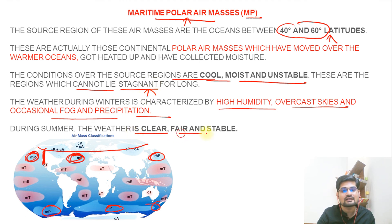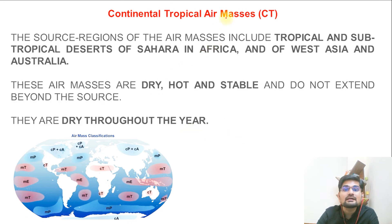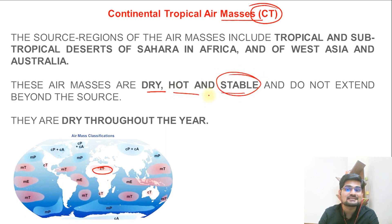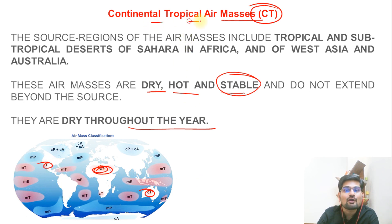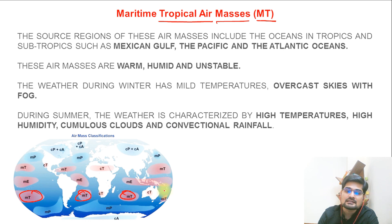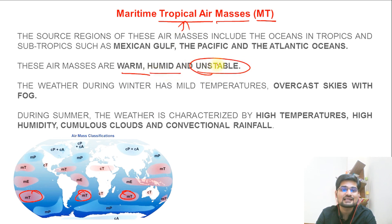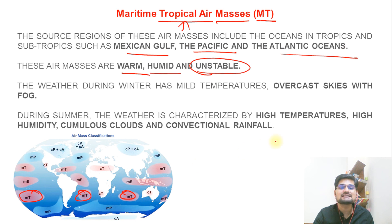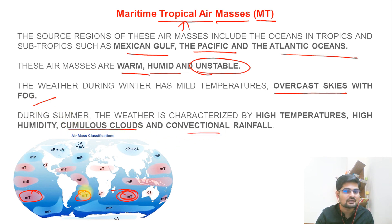The continental tropical air mass (CT) is found in the interior of the continent — warmer and dry because no moisture is available — and that is why it is stable, remaining dry throughout the year. The maritime tropical air mass (MT) is warm, humid, and unstable, found in areas like the Gulf of Mexico, Pacific, and Atlantic — the major oceanic areas in the southern hemisphere. When unstable, cloud formation happens: overcast skies, fog formation, and convective cumulus cloud formation occur in these belts.